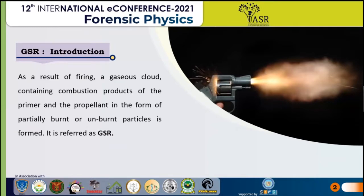The primer and propellant charge residues formed during burning in the form of a gaseous cloud are generally referred to as gunshot residue. In forensic science investigations, gunshot residue is usually referred to as the surest sign of firearm discharge.